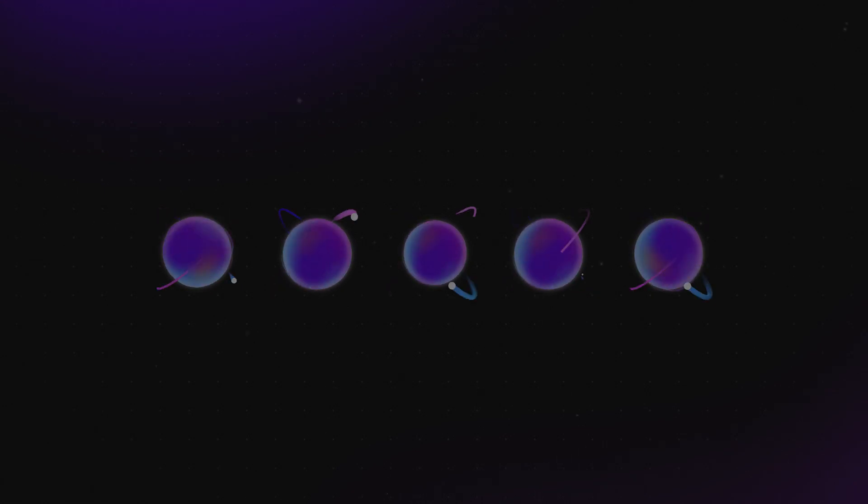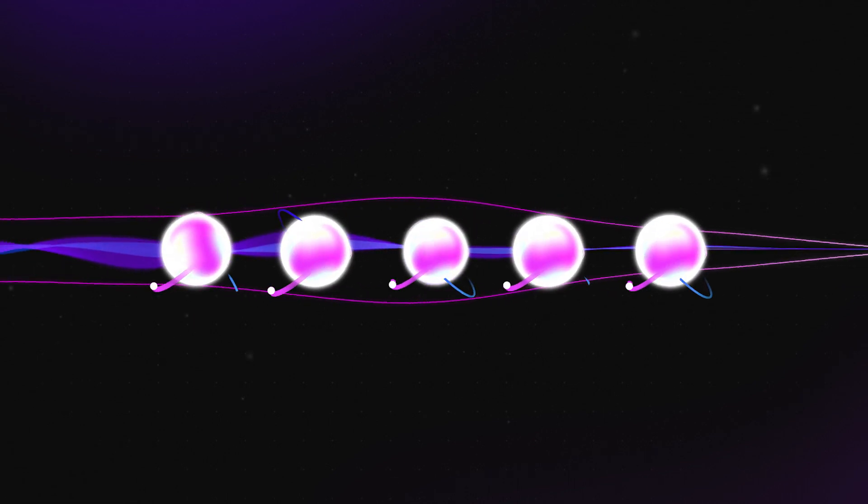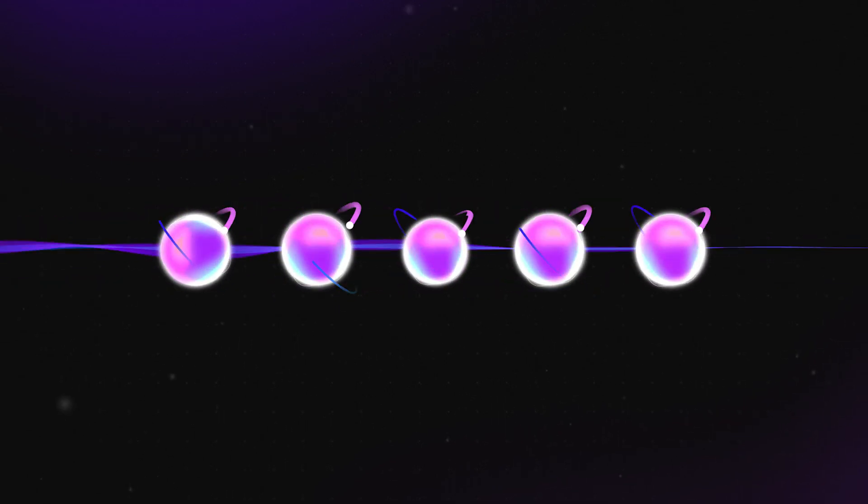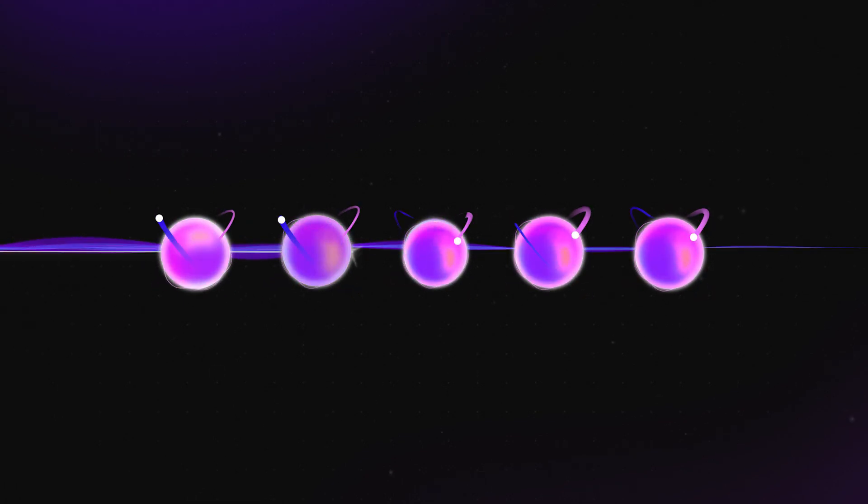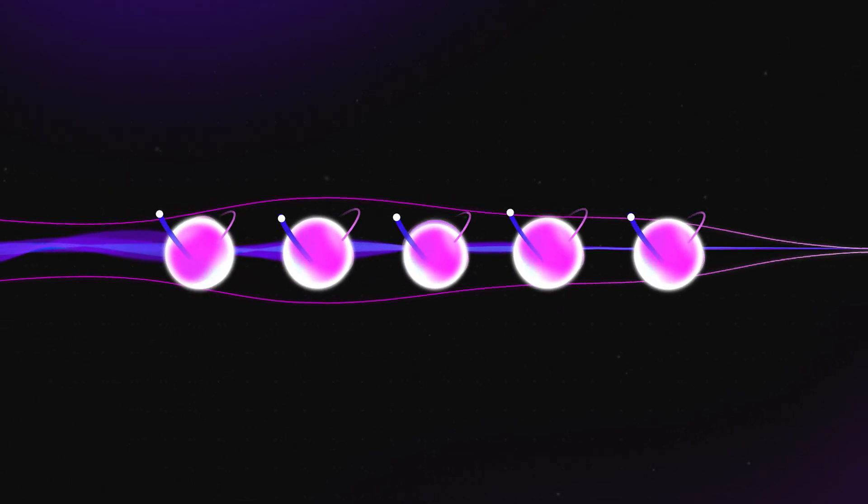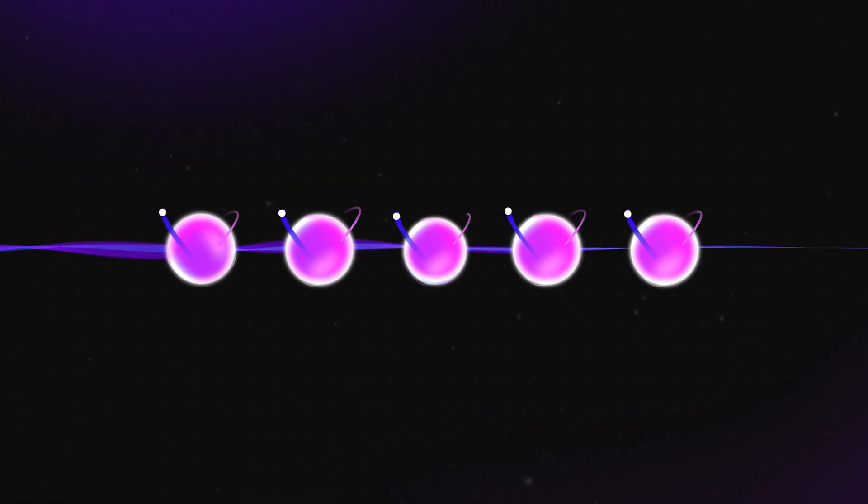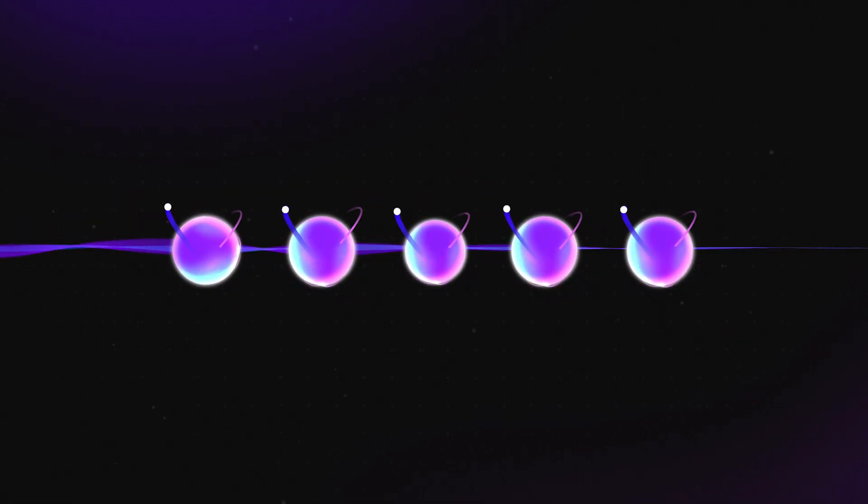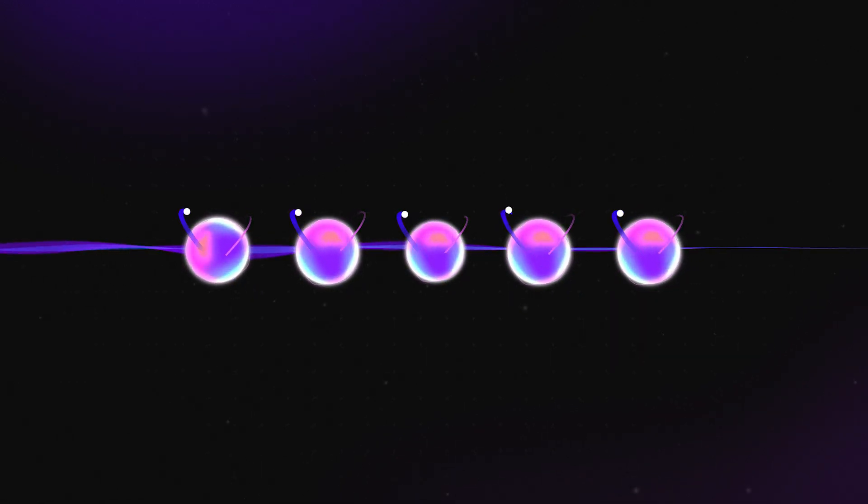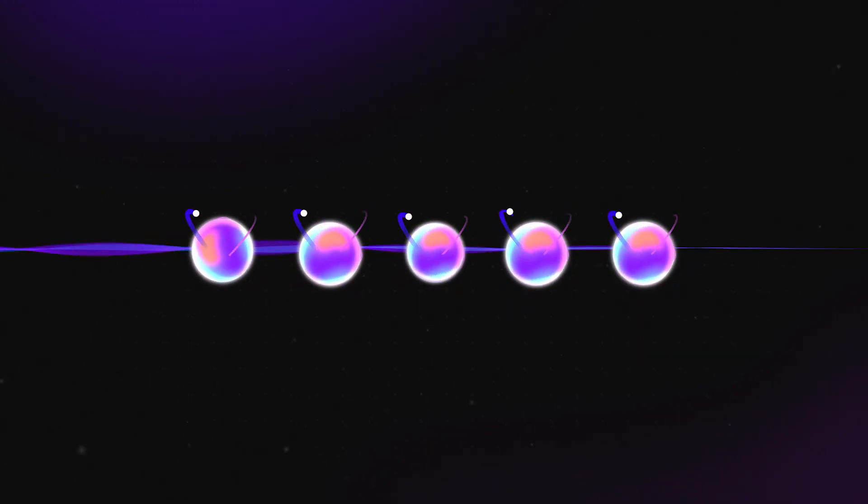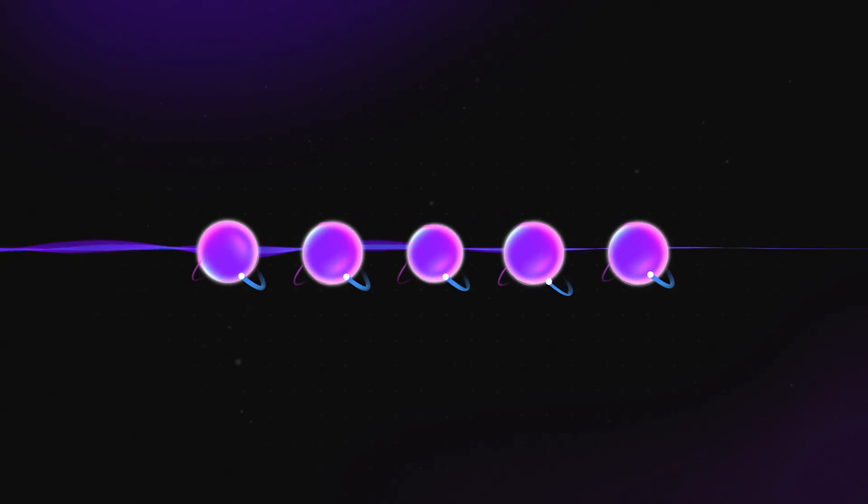There's one more element we use in quantum computers: entanglement. This is a special link between quantum systems that can only be described using quantum physics. In a sense, when two objects, like qubits, become entangled, they can't really be described as two objects any longer. They're now one shared object, a condition that can again be induced by applying the right pulse of laser or microwave radiation.